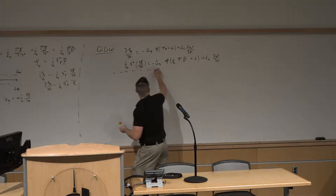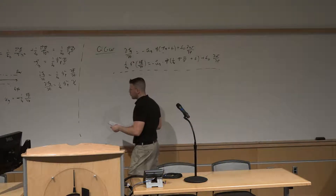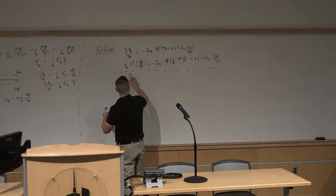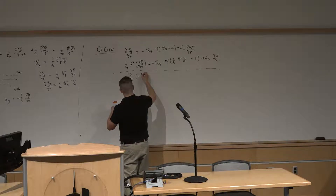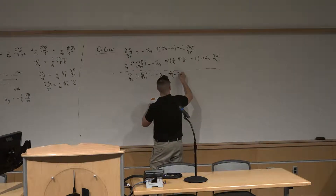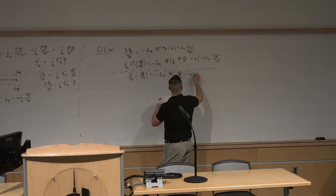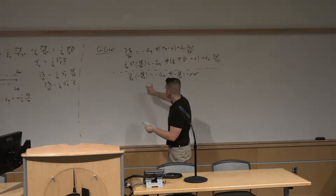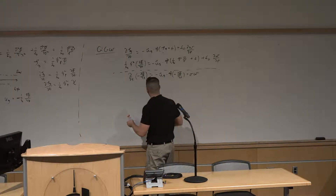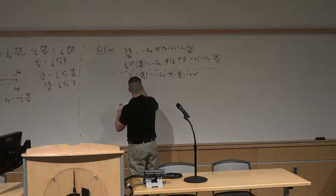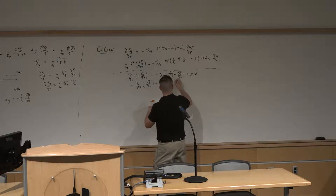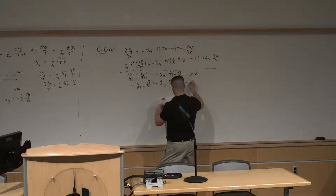That's the vorticity equation from the left-hand side. We're also going to use the quasi-geostrophic thermodynamic energy equation to get: ∂/∂t(−∂φ/∂p) = −u_g·∇(−∂φ/∂p) + σω. Switching the order of differentiation on the left-hand side and multiplying out the minus signs gives: −∂/∂p(∂φ/∂t) = u_g·∇(∂φ/∂p) + σω.